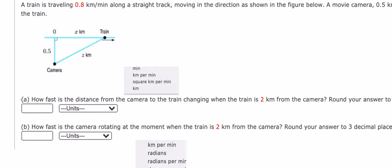So we need to have question A and question B. So now I will show you the technique. We know that the train is changing when the train is 2 km, so that is about number 2 in here.